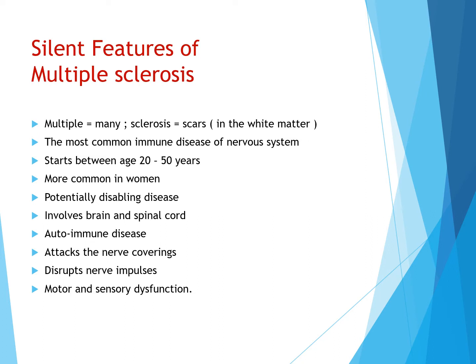This condition can start anytime between the age of around 20 to 50 years, but it is more commonly observed in women. As it is an autoimmune disease, the abnormal immune system attacks the myelin sheath and damages it, causing disturbance in sending nerve impulses. The signaling mechanism is disturbed because of loss of the insulating covering over the nerves.